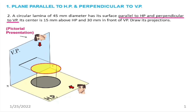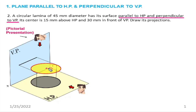The condition of plane parallel to HP and perpendicular to VP means it is automatically perpendicular to VP as well. So a plane parallel to HP is automatically perpendicular to VP. Its center is represented as O.